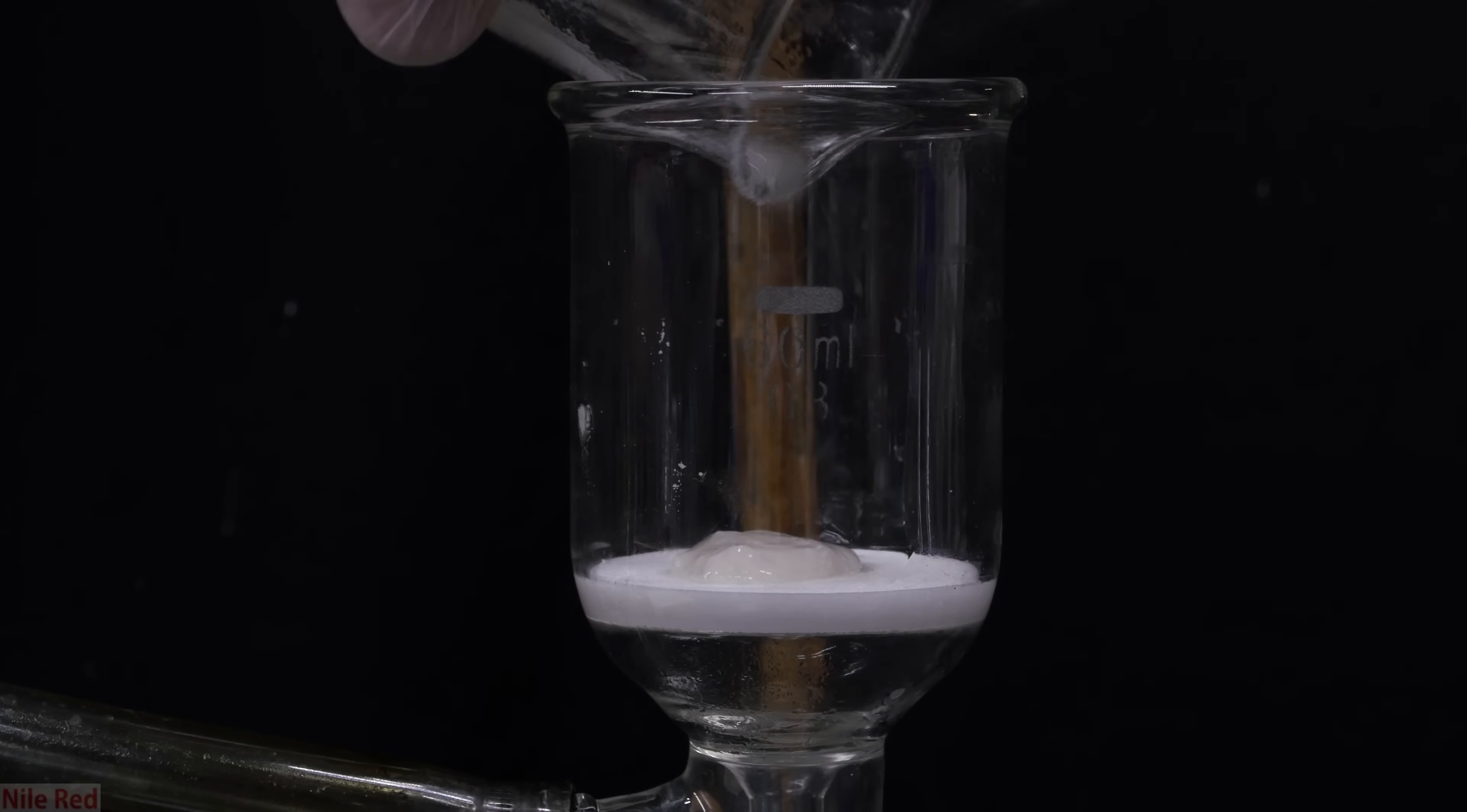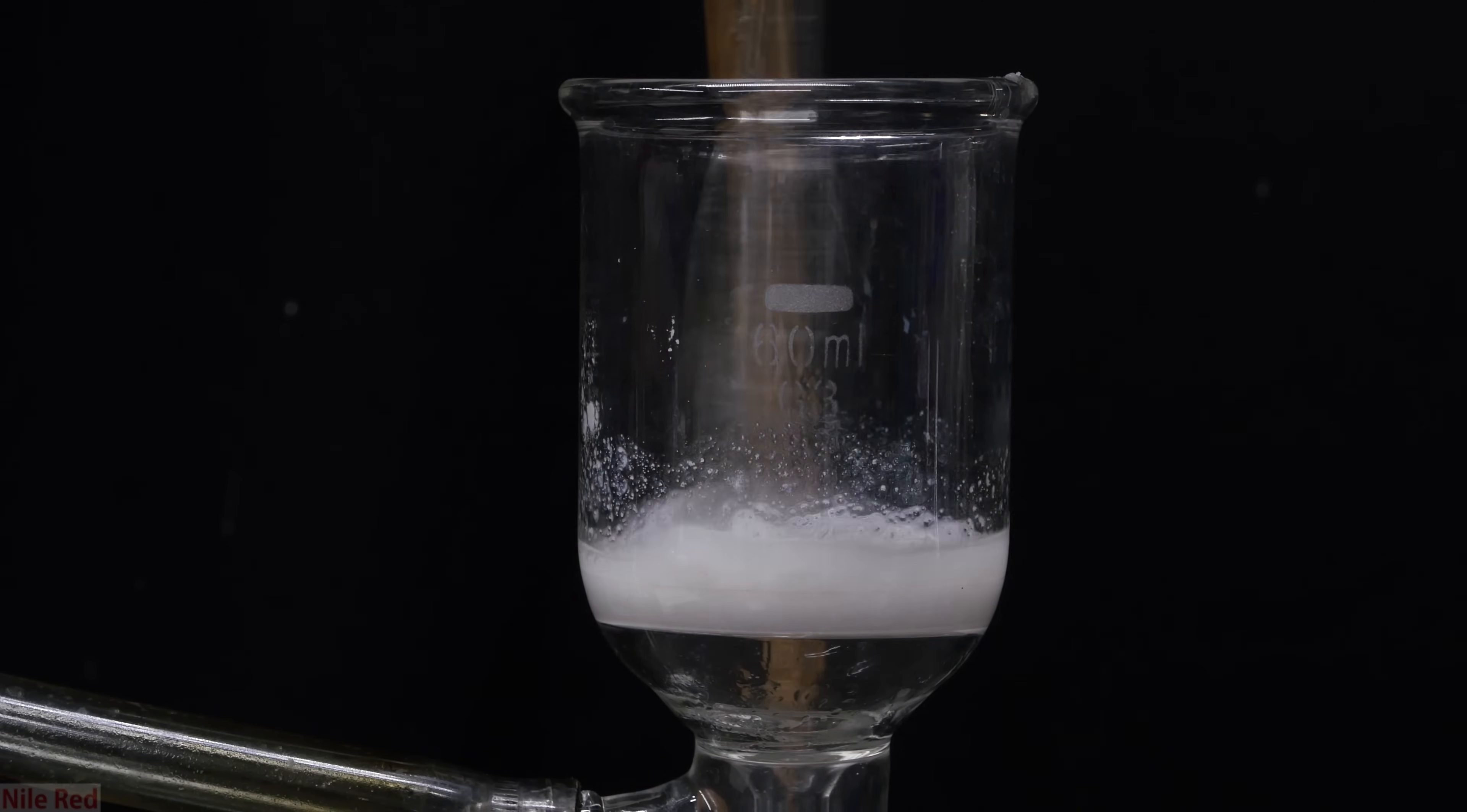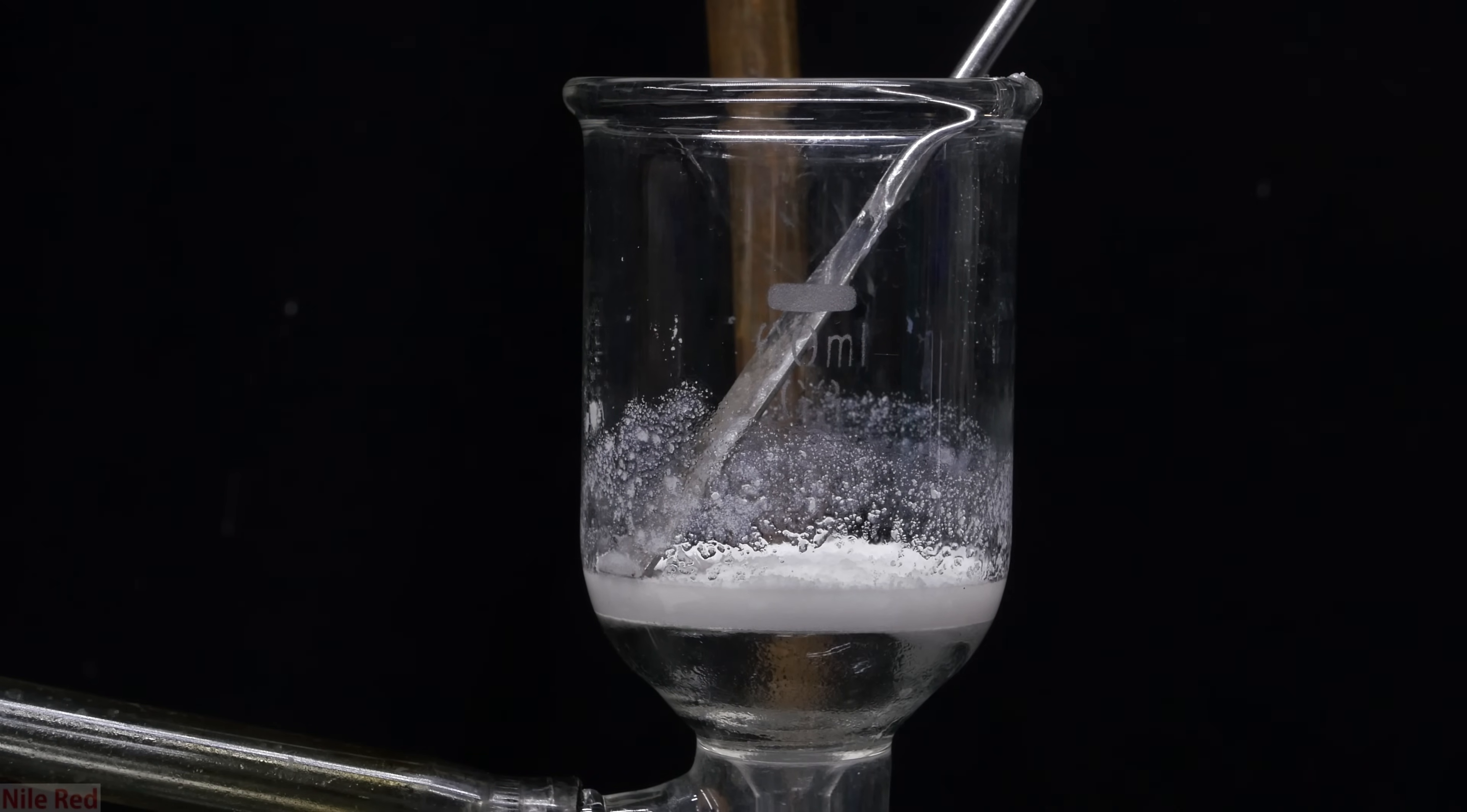I then set up a vacuum filtration to isolate my denatonium benzoate. I also used a little bit of acetone to wash out the beaker. The denatonium benzoate at this point is still really gooey, so I used a spatula to mix it around and wash it in the acetone. After mixing it around a lot, I pull away the acetone and try to dry up the denatonium benzoate as much as possible.